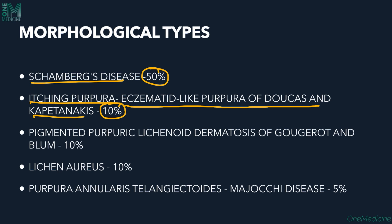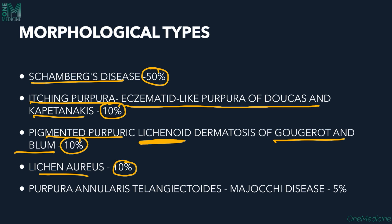Pigmented purpuric lichenoid dermatosis of Gougerot and Blum is another type, characterized by lichenoid features in the histology. It accounts for about 10% of cases. Lichen aureus is yet another variety, also accounting for approximately 10% of cases.